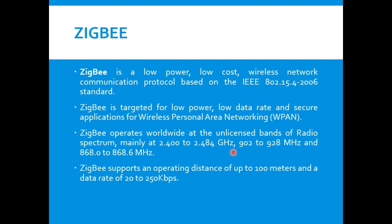Zigbee operates on unlicensed spectrum — there is no regulatory board that sets the physical link specifications, so anyone around the world can communicate through these bands. It supports an operating distance up to 100 meters, with a very low data rate of 20 to 250 Kbps. It is a trade-off: minimum information transfer at maximum security.